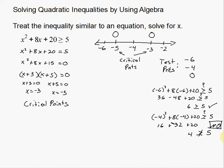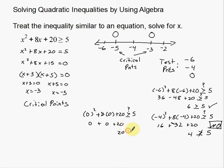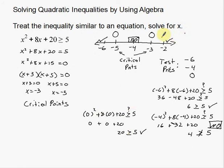Last, plug in 0: 0 squared plus 8 times 0 plus 20. That's just 0 plus 0 plus 20, which equals 20. And 20 is greater than 5, so 0 does work. So the region to the left of negative 5 works, the middle region does not work, and the region to the right of negative 3 works. Those are our two solution regions.